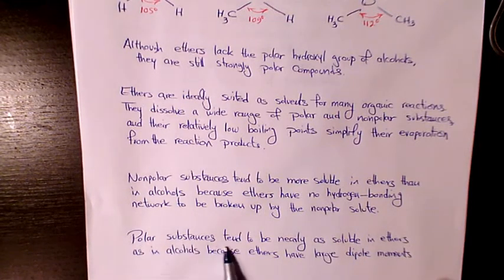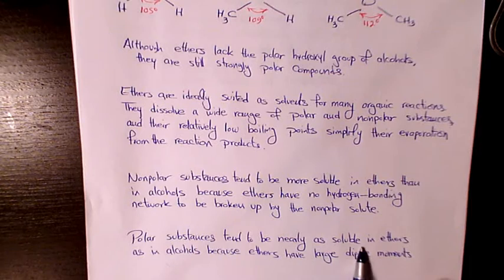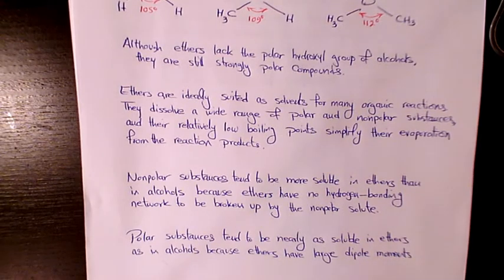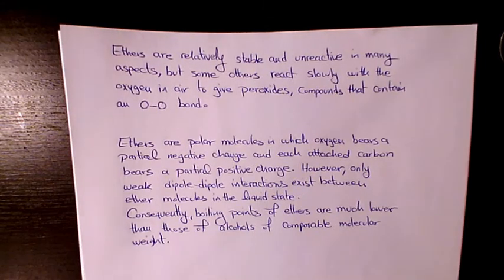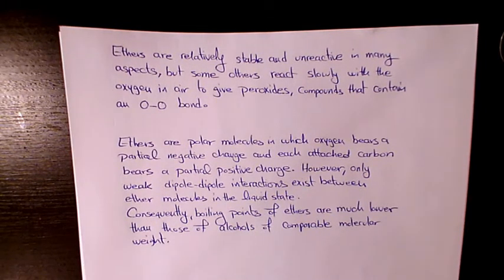Polar substances tend to be nearly as soluble in ethers as in alcohols because ethers have large dipole moments. Ethers are relatively stable and unreactive in many aspects, but some ethers react slowly with oxygen in air to give peroxides. Some of these ethers react slowly with oxygen in air to produce peroxide compounds that contain O-O bonds, and some of them are very explosive.